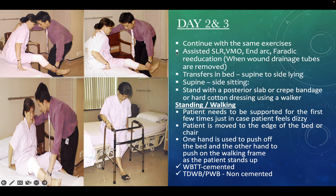Days 2 and 3: continue the same exercises from Day 1. Additional exercises include assisted SLR, VMO and end-range quadriceps re-education. When wound drainage tubes are removed, transferring in bed — from supine to sidelying, then supine to side-sitting — is practiced. The patient is also taught to stand with a posterior slab, crepe bandage, or hard cotton dressing, using a walker.